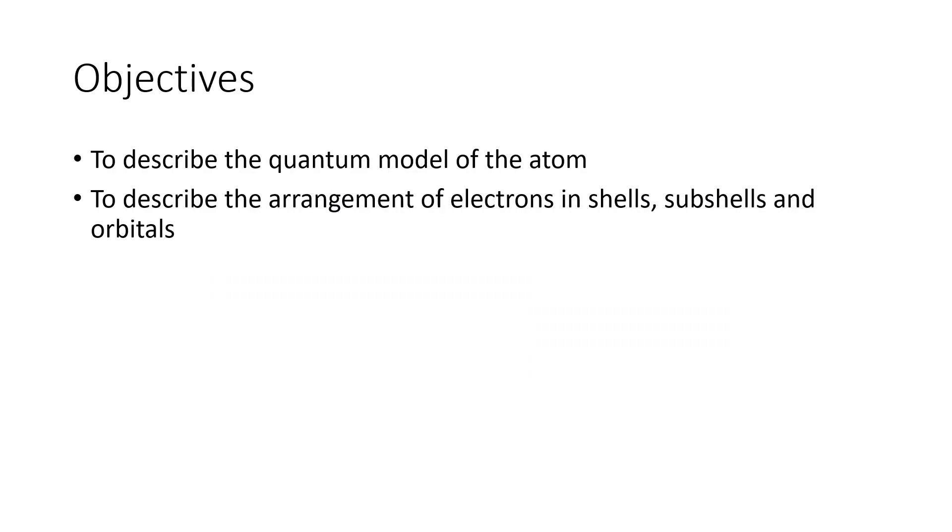So our objectives were to describe the quantum model of the atom. That's where we were going over to the probability description and we'll talk about how the electrons are arranged in orbitals and the orbitals are organized into subshells and shells. And yeah, that looks like it for this section.